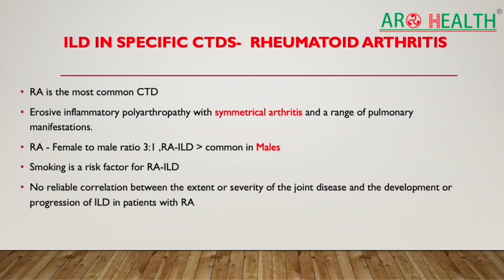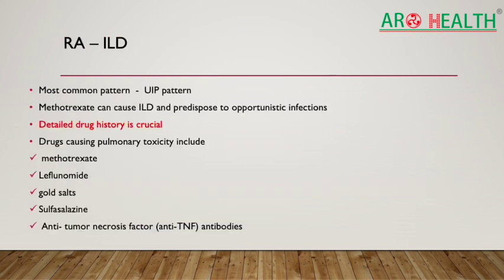Regarding RA-ILD specifically: rheumatoid arthritis is the most common CTD causing ILD. It features erosive inflammatory polyarthropathy with symmetrical arthritis. Although RA is more common in females, RA-induced ILD is more common in males. Smoking is a major risk factor for developing ILD in RA, but there is no correlation between the extent of joint involvement and the extent of ILD progression.